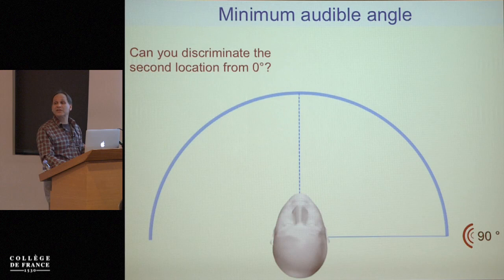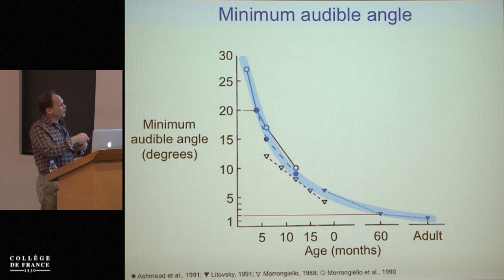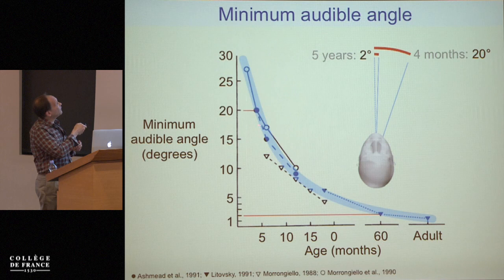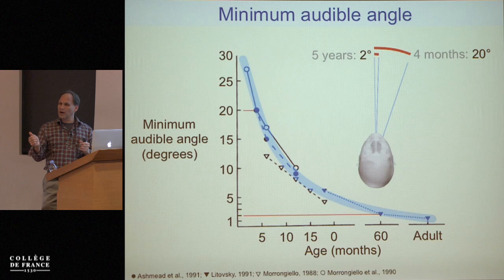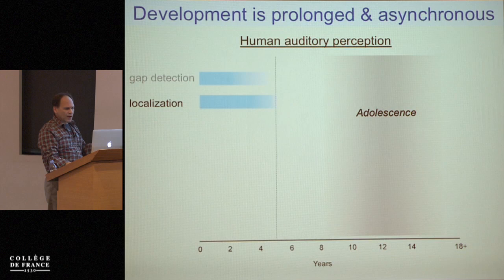Age is plotted on the x-axis — the first ages are in months up to about one year, with a data point from five-year-olds and the last from adults. At five years of age, children can detect about a two-degree difference — just a bit larger than the apparent width of a thumb held at arm's length — whereas four-month-old children need about 20 degrees. Sound localization reaches adult performance a little bit later than gap detection.